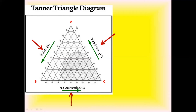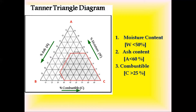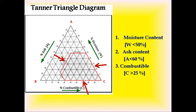The next important point is to find out whether the intersection point of the three important characteristics falls within the shaded portion demarcated in red, or outside it. If the intersection point falls within the shaded portion, the waste will be considered feasible to be used as fuel in an incinerator. Whereas if the intersection point falls outside the shaded portion, the waste composition will be considered not feasible to be used as fuel in an incinerator.